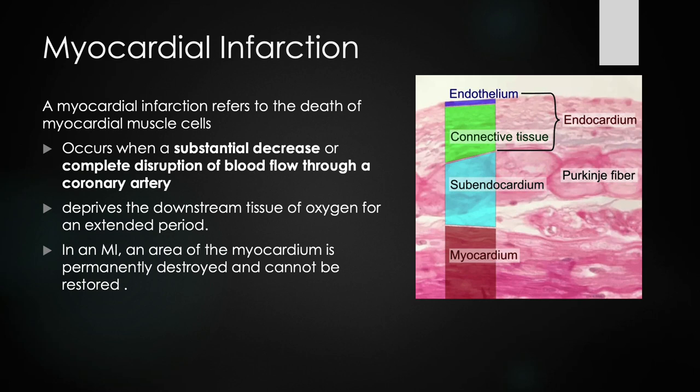A myocardial infarction involves a couple of hits. The first hit is the decrease in blood flow. The second hit is that because there's a decrease in blood flow, the tissues demanding oxygen are going to have limited oxygen for an extended period of time. This is generally due to the development of atherosclerosis and plaque, leading to a decrease in oxygen delivery.